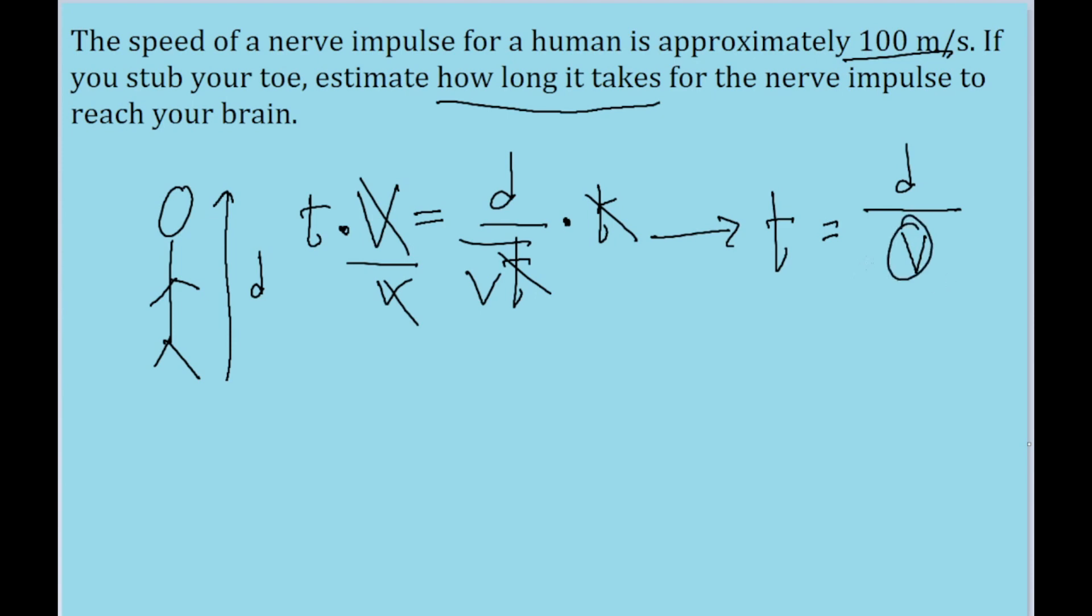This is given to us, so all we need to do is choose a d value. For me personally, I would look this up and the average height of a person, of a man, is about 1.7 meters.